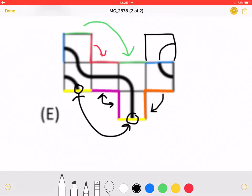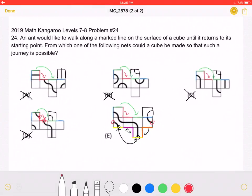So as we can see, this part would match up over here, and the entire path would be connected. The ant would have a complete path to go on, which means answer choice E is correct.